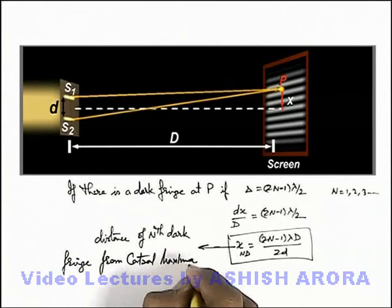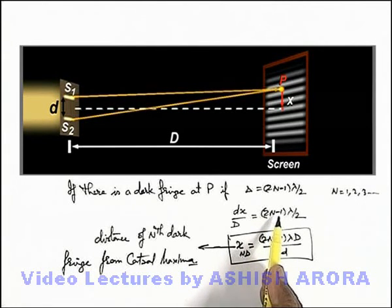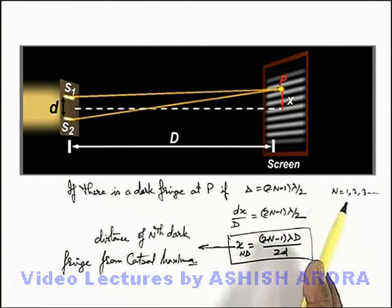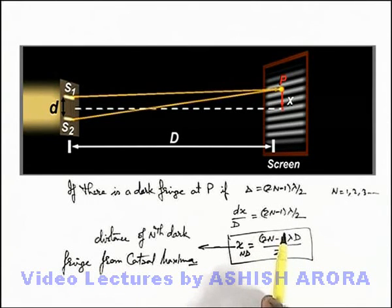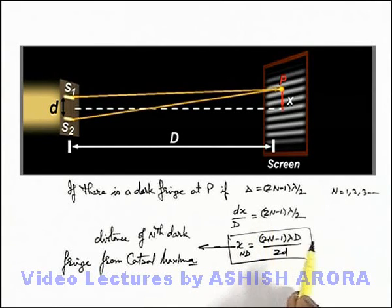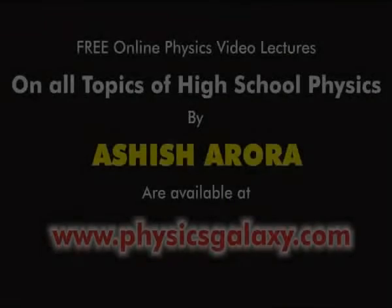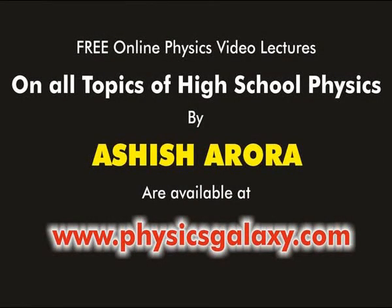You must be very careful: if we use (2n+1) for all odd multiples, then n equal to zero would correspond to the first dark fringe closest to the central maxima. That's why we have taken the odd multiple as (2n−1) instead.